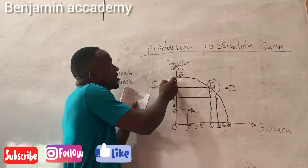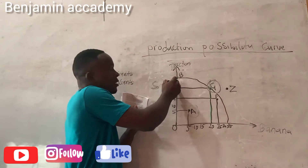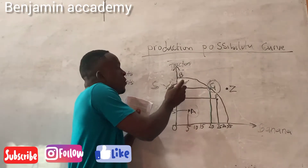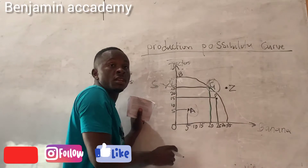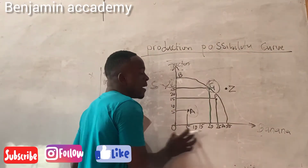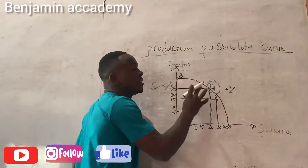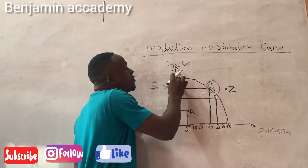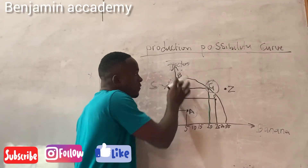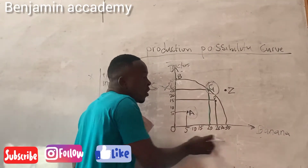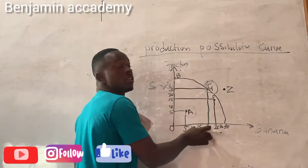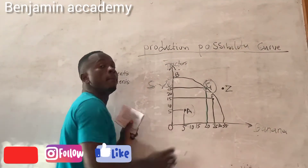It's moving from point 30 to point 25, which is moving from B to G. So for him to produce banana, he needs to forgo 5 units of tractor in order to produce 20 units of banana.